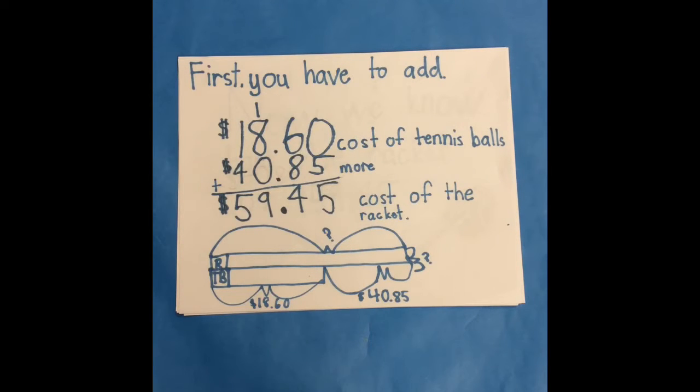First you have to add. I made a bar model to show how I solved it. The tennis balls cost $18.60 and the racket cost $40.85 more. I'm trying to find out what the cost of the racket is.